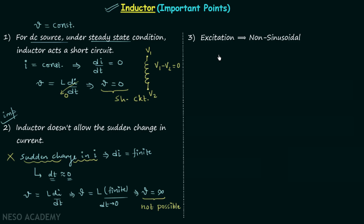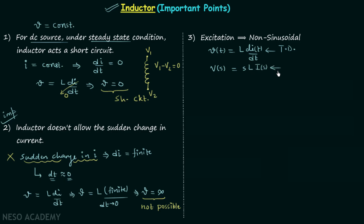The third point is that whenever the excitation is non-sinusoidal, we can perform the analysis of the network in the time domain or in the Laplace domain. In the time domain, voltage across the inductor is V(t) = L di/dt. Performing the Laplace transform gives V(s) = sL·I(s), which is the relationship between voltage and current in the Laplace domain.